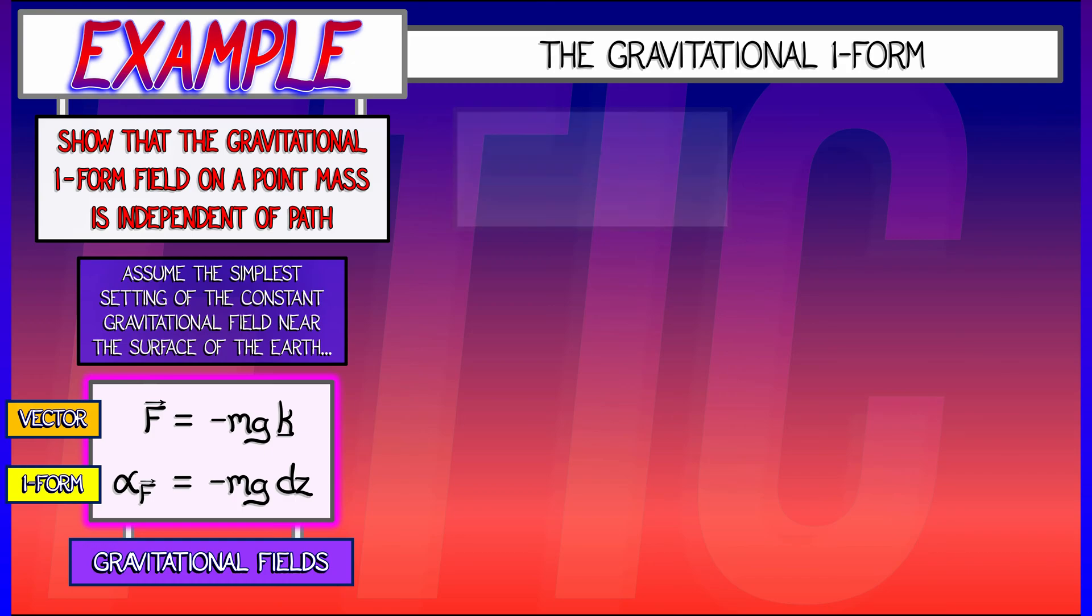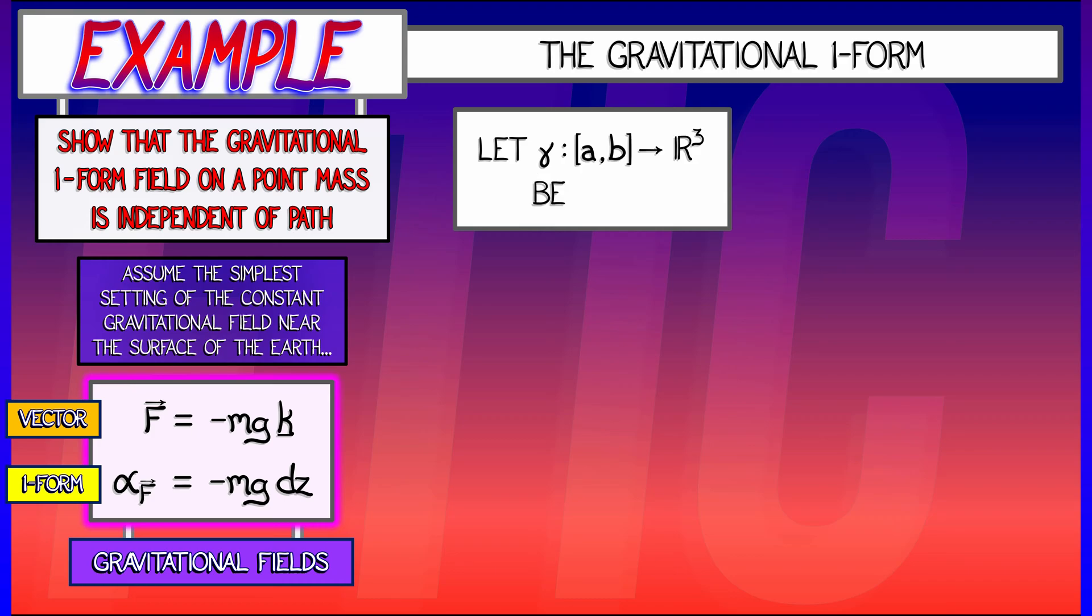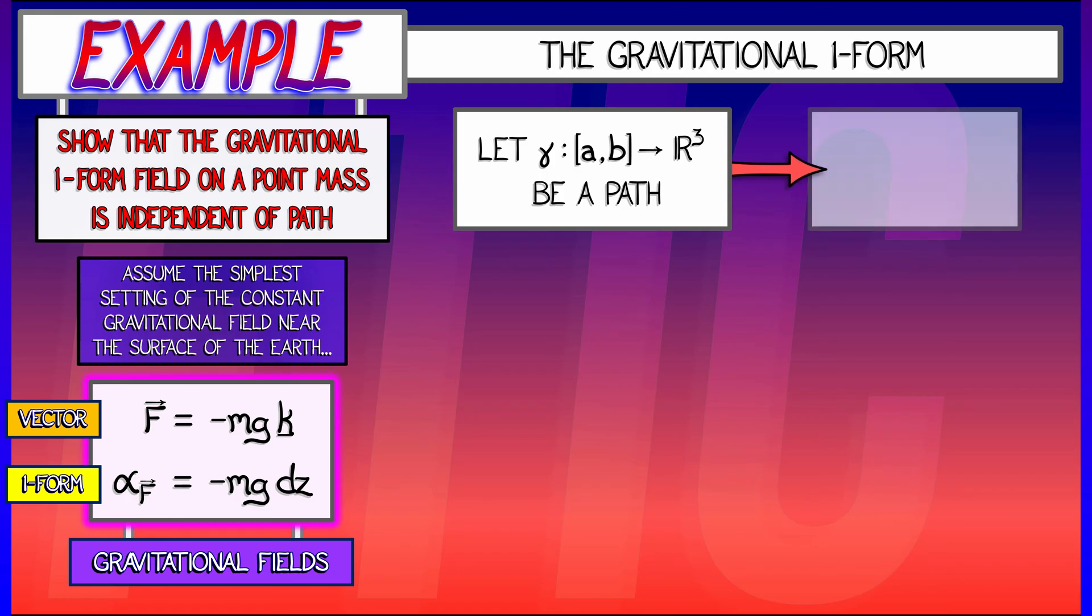k converts to dz. Okay, so what happens when we integrate that one-form field along a path? Let's say gamma is a parametrized path in R3 that has components x of t, y of t, and z of t.